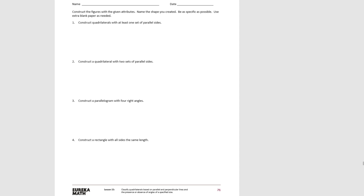For number one we have a quadrilateral, so that tells us that we need a four-sided shape and at least one set of parallel sides. Using your straight edge or ruler and your right angle template, you're going to draw a set of parallel lines. Then the other two lines can be anything you want as long as it's a closed shape with four sides. And so this shape would be called a trapezoid.